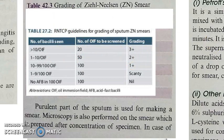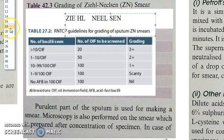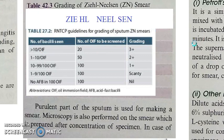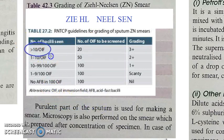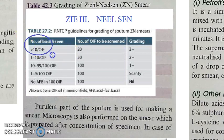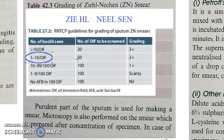One important point: whenever you do direct microscopy under Ziehl-Neelsen stain, the number of bacilli you see determines the grading. If you are seeing greater than 10 bacilli in 20 oil immersion fields, the grading will be the highest — 3 plus. If you are seeing 1 to 10 bacilli in 50 fields, then it is 2 plus.